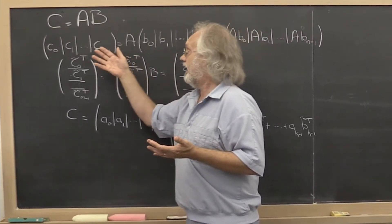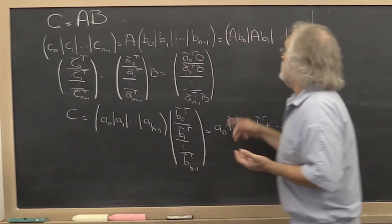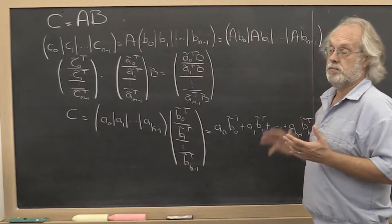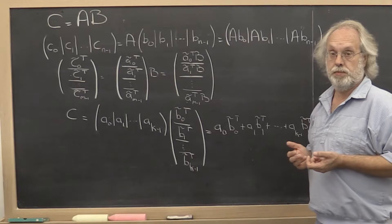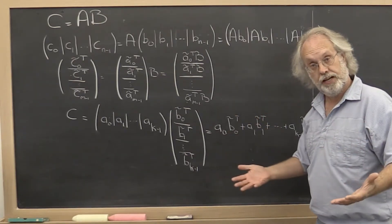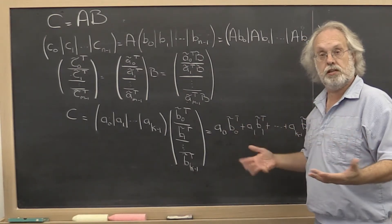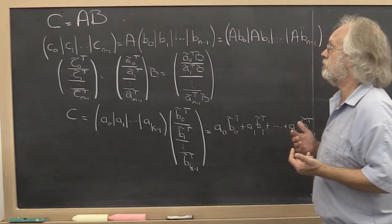In other words, a typical column in the result matrix C is just equal to A times the corresponding column in matrix B. Right? And that we've just justified. We've said, look, that's the way it should be defined if it is to represent composition of linear transformations.